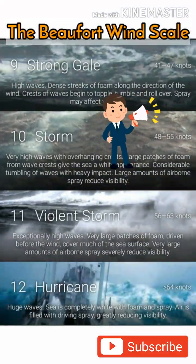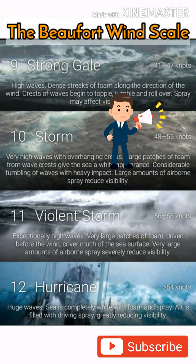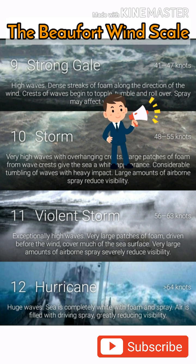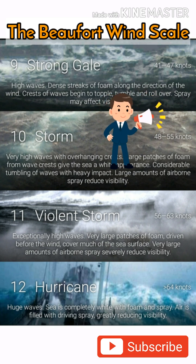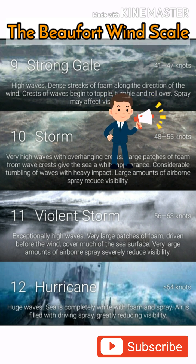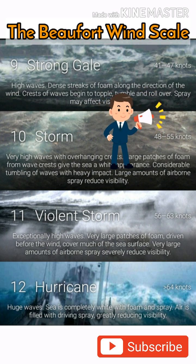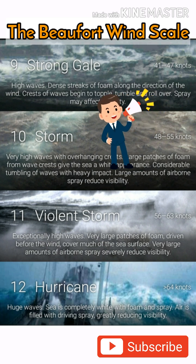Force 9 — Strong Gale. Wind speed 41 to 47 knots. High waves, wave crests topple over and spray affects visibility. Force 10 — Storm. Wind speed 48 to 55 knots. Very high waves, sea surface is largely white, visibility affected.